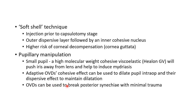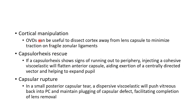OVDs can also be used to break posterior synechiae with minimal trauma. OVDs are useful to dissect cortex away from the lens capsule to minimize traction on fragile zonular ligaments. For capsular axis rescue, if a capsular tear shows signs of running out to the periphery, injecting a cohesive viscoelastic will flatten the anterior capsule, aiding exertion of a centrally directed vector and helping to expand the pupil.